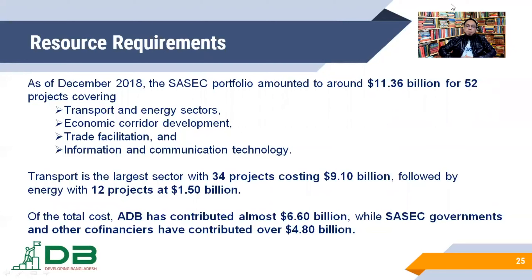These projects were mainly in the transport and energy sector, economic corridor development sector, trade facilitation sector, as well as the information and communication technology sector. The largest budget was spent on transportation projects — a total of 34 projects required $9.10 billion, followed by energy sharing projects, which were 12 projects for $1.5 billion. Among this $11.36 billion, $6.60 billion was supplied by the Asian Development Bank, and the remaining $4.8 billion was supplied by the SASEC governments.